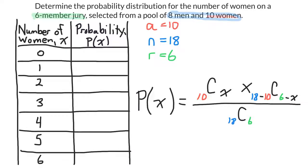So if I want to find the probability that the number of women on the jury is zero, I'm trying to calculate P zero. So I'll just replace X with zero. So this is my formula now.